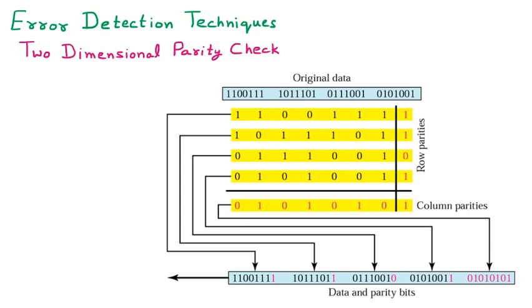We are discussing the two-dimensional parity check, or 2D parity check. It is one of the error detection techniques — whenever the sender is sending data to the receiver, during transmission the data can become corrupted or bits can be changed. Those corrupted bits are handled by the 2D parity check. This mechanism is called an error detection mechanism, where we find out the error in the data sent from sender to receiver.